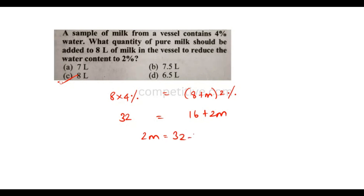32 minus 16. 2m is equal to 16. m is equal to 8.